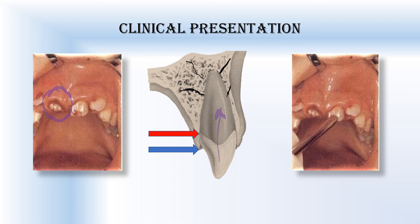If we try to move such a tooth, we will observe that it is totally immobile because it gets locked in the alveolar bone. When we percuss this tooth, we will hear a high ankylotic sound indicating that the tooth is ankylosed within its socket. And if we conduct a pulp test, we will observe a negative response indicating that the neurovascular tissues have been damaged.